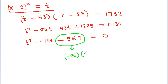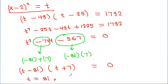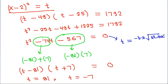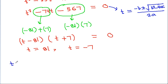Looking at -567, it factors as -81 times 7, and -74 is -81 plus 7. So the factors are (t - 81)(t + 7) = 0, giving t = 81 or t = -7. You can also find t using the quadratic formula: t = (-b ± √(b² - 4ac)) / 2a, which also gives t = 81 and t = -7.